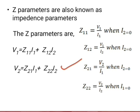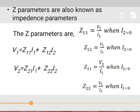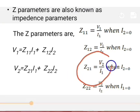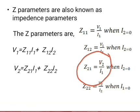From equation 2, Z21 equals V1 divided by I1 when I2 equals 0, that means the output is open. Z22 is a constant called forward transfer impedance.